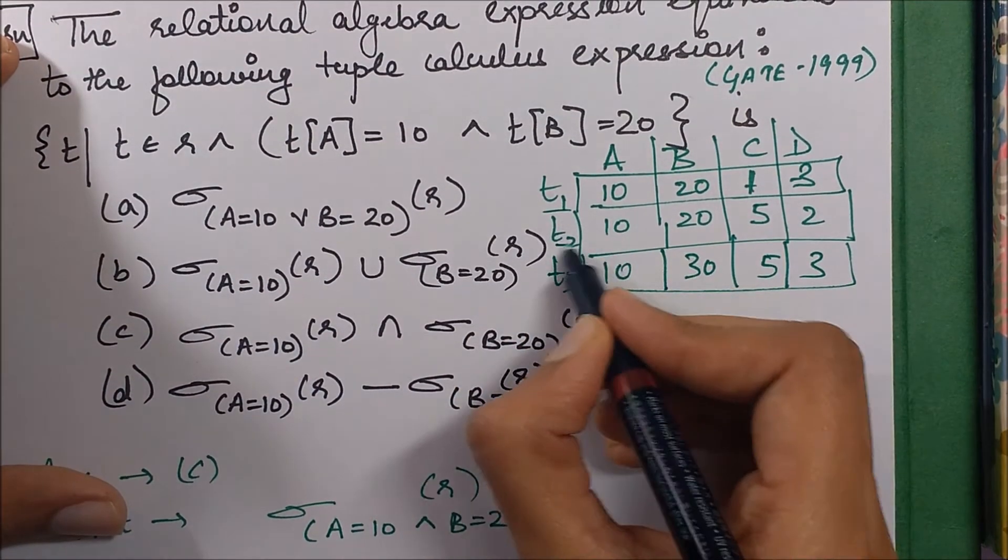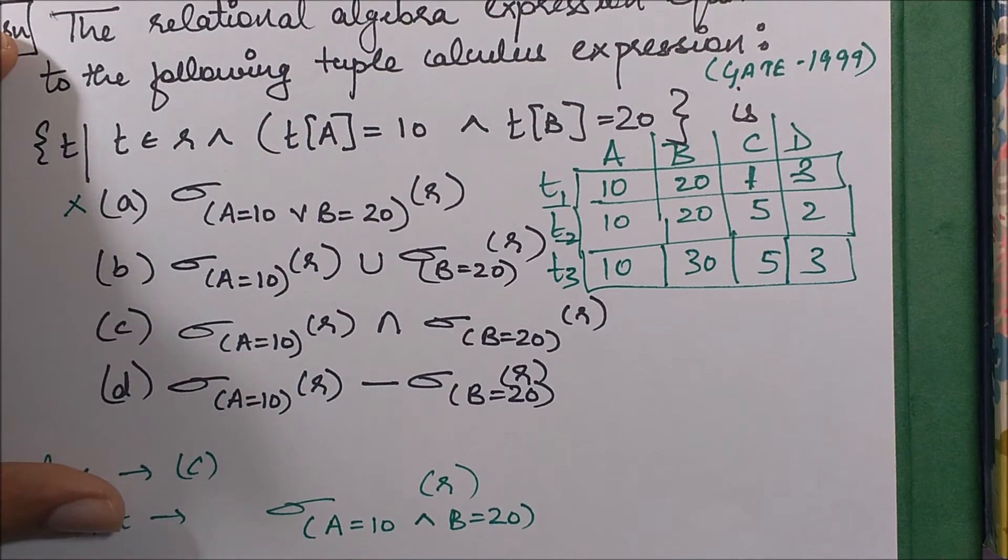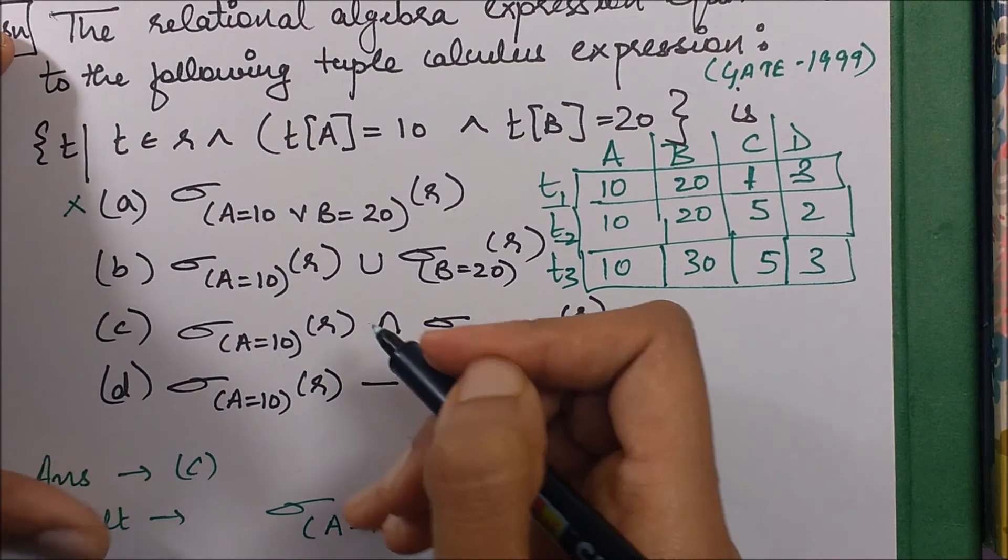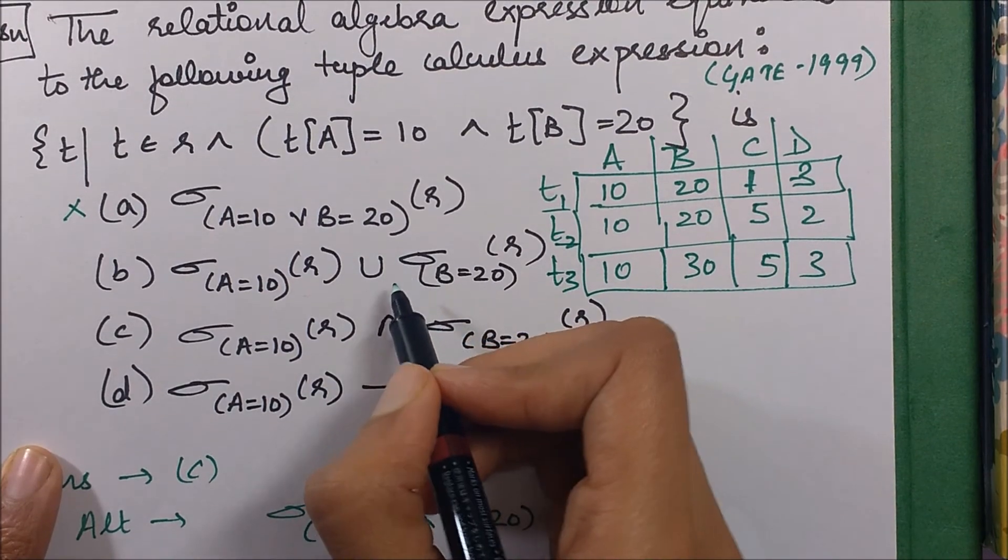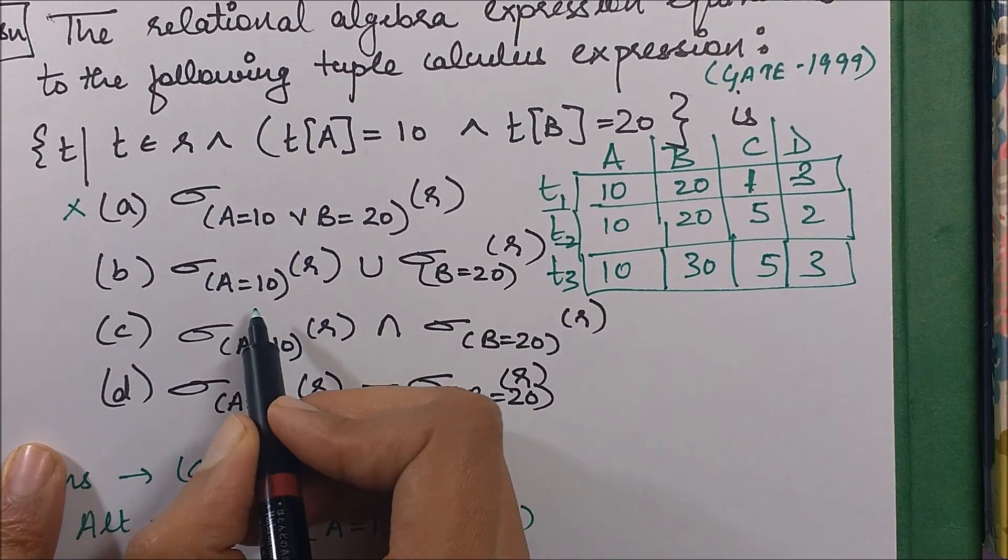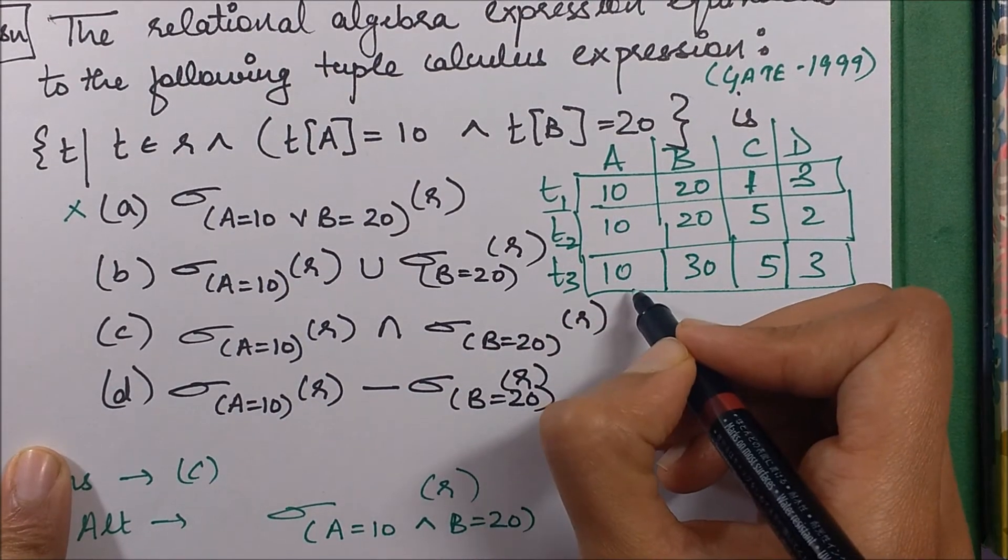We move to the next option. This is again a similar form wherein we just union all the tuples which have a equals 10, so all these three, and union with b equals 20, these two.